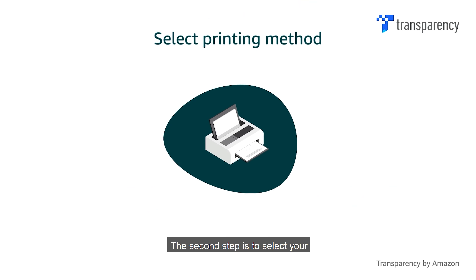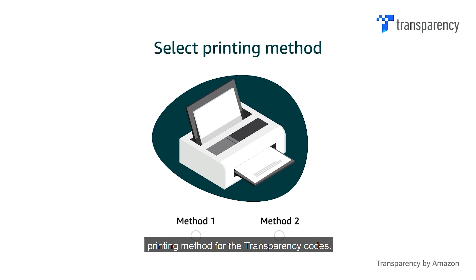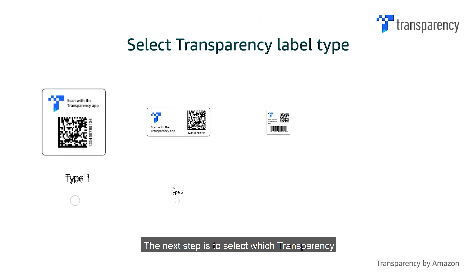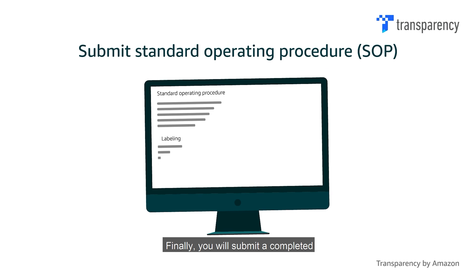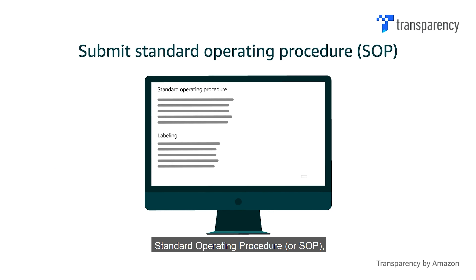The second step is to select your printing method for the Transparency codes. This step is crucial as it defines your operational workflow. The next step is to select which Transparency label type will be affixed to your products. Finally, you will submit a Completed Standard Operating Procedure, or SOP, defining how the labelling will be done.